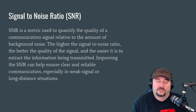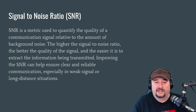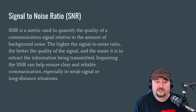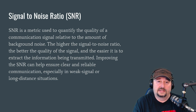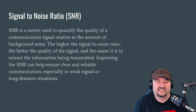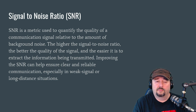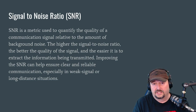Signal-to-noise ratio is a metric used to quantify the quality of a communication signal relative to the amount of background noise. The higher your signal-to-noise ratio, the better the signal quality, and the easier it is to extract information being transmitted — whether a digital signal or someone talking on AM or single sideband. Improving SNR can help ensure clear and reliable communication, especially in weak signal or long-distance situations.